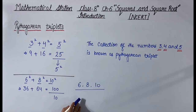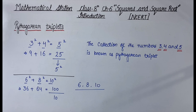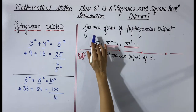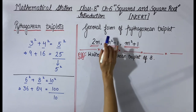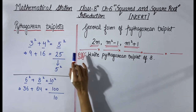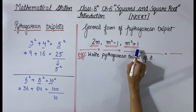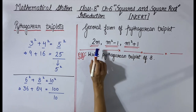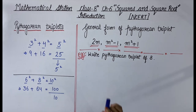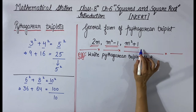To understand Pythagorean triplets fully, we took examples where we chose two numbers and found the third. But in exercise questions, one number will be given and we have to find the other two. For this, we use the general form of a Pythagorean triplet: the three members are 2m, m² − 1, and m² + 1, where m is some number.